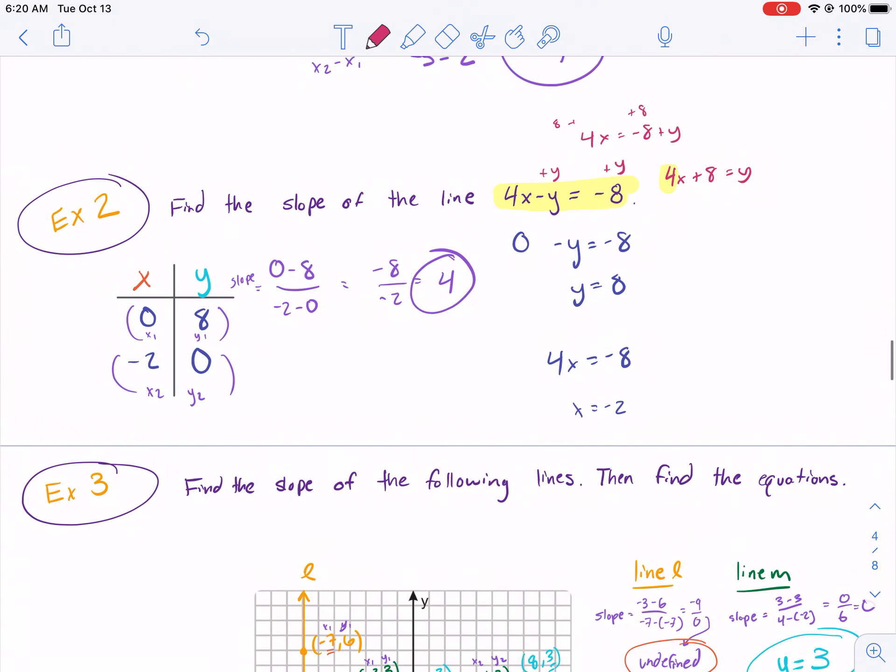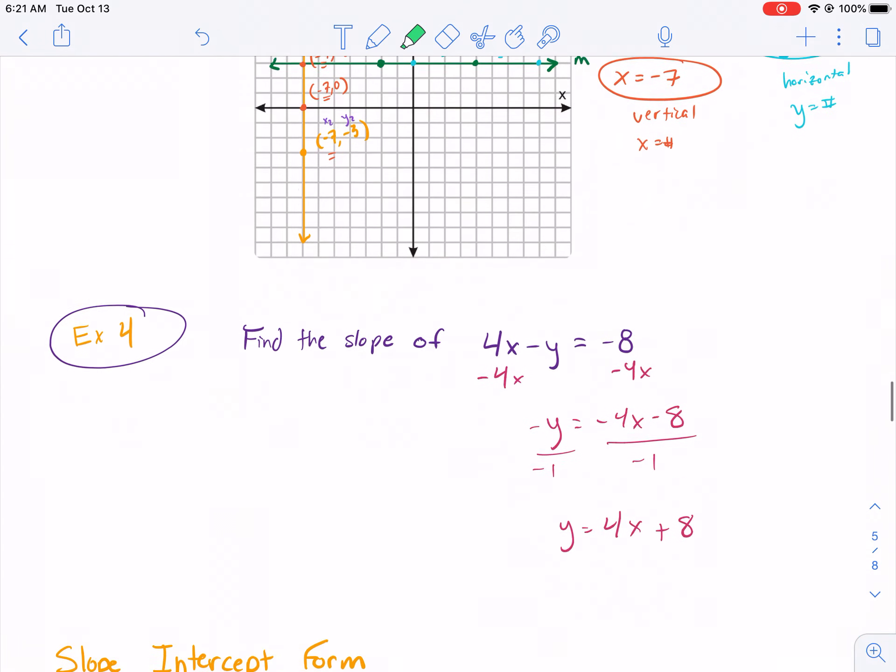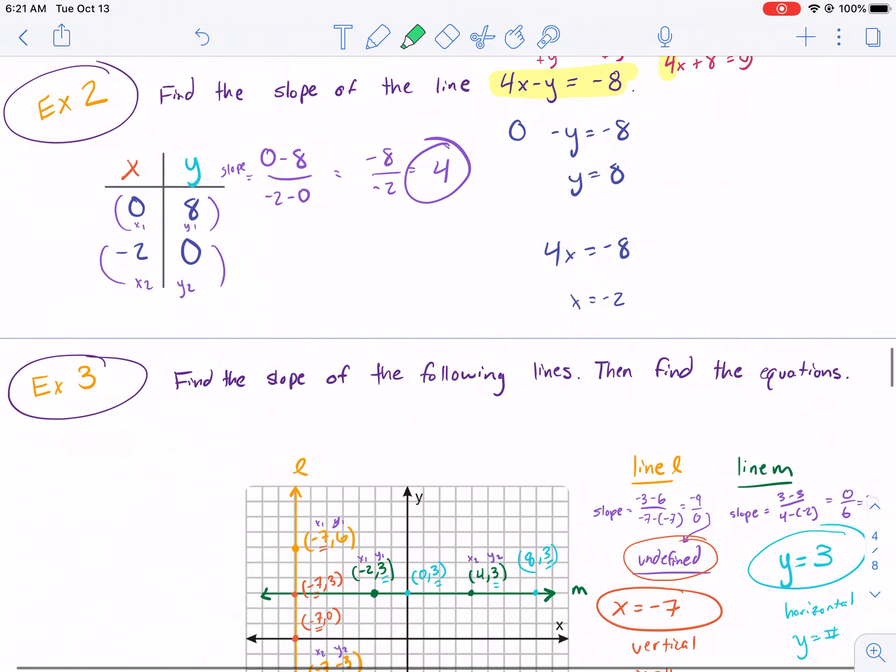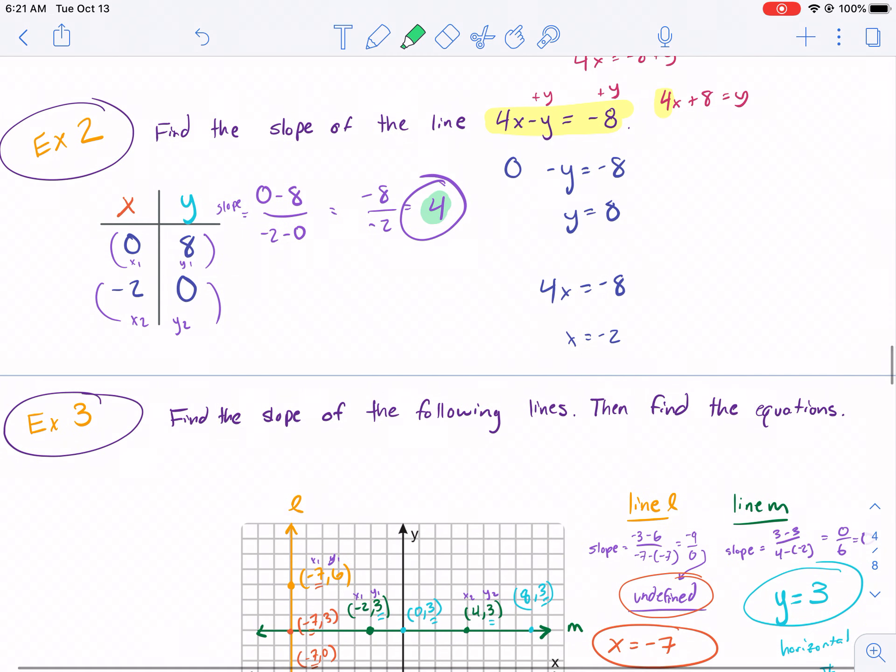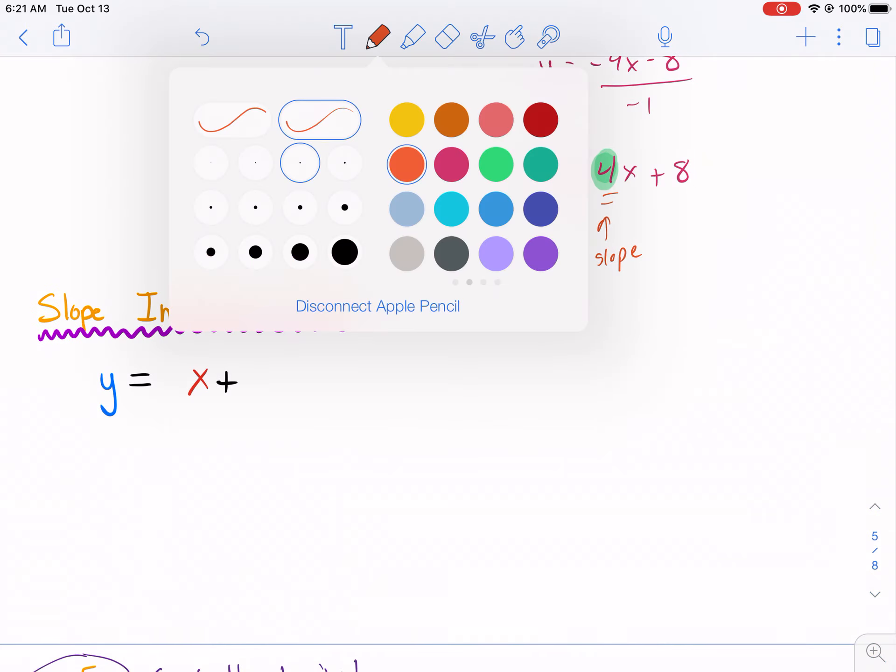Now, that was supposed to be the grand reveal. So, what do you notice? It's the same equation. Do you remember the 4 from earlier? Right here. There's the 4. That's what we found out when we did the Y2 minus Y1. We got that same 4. So, you'll notice that when it's in this form where Y is by itself on one side of the equal sign, that the number in front of X will be the slope. This is called slope intercept form.